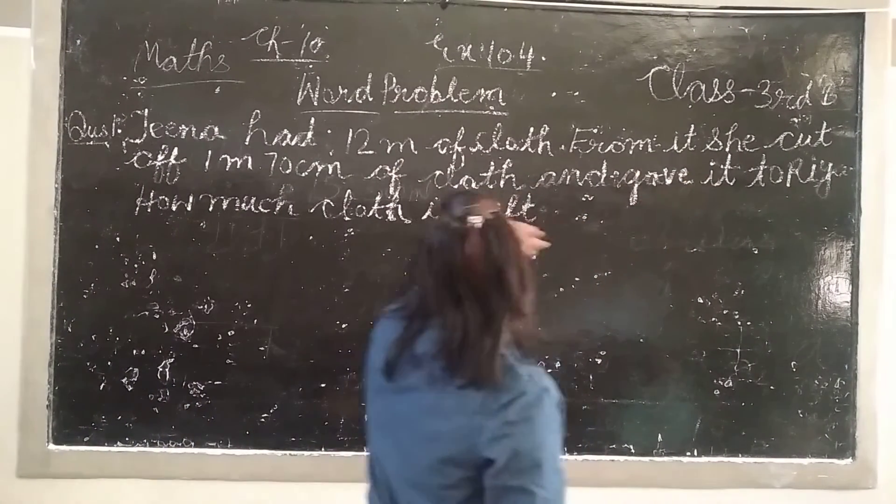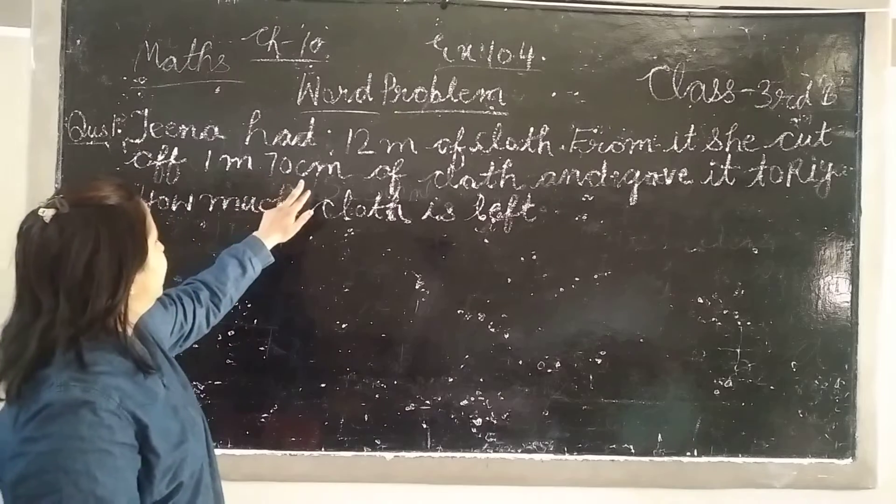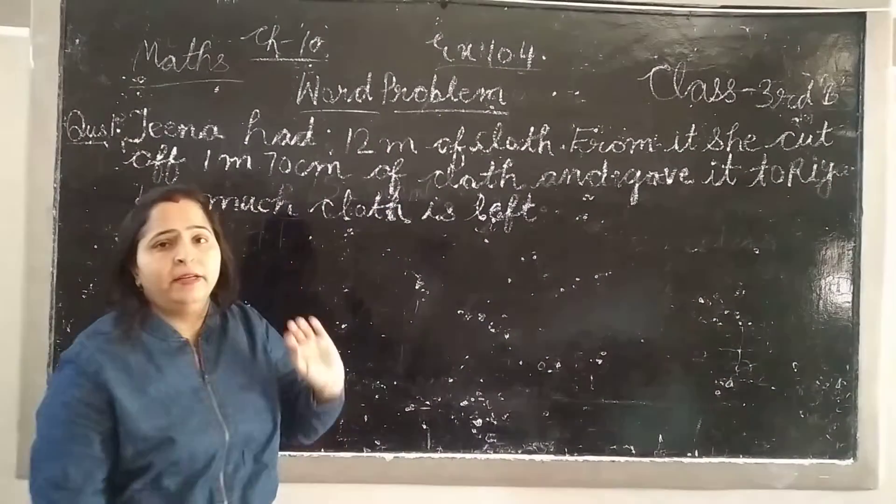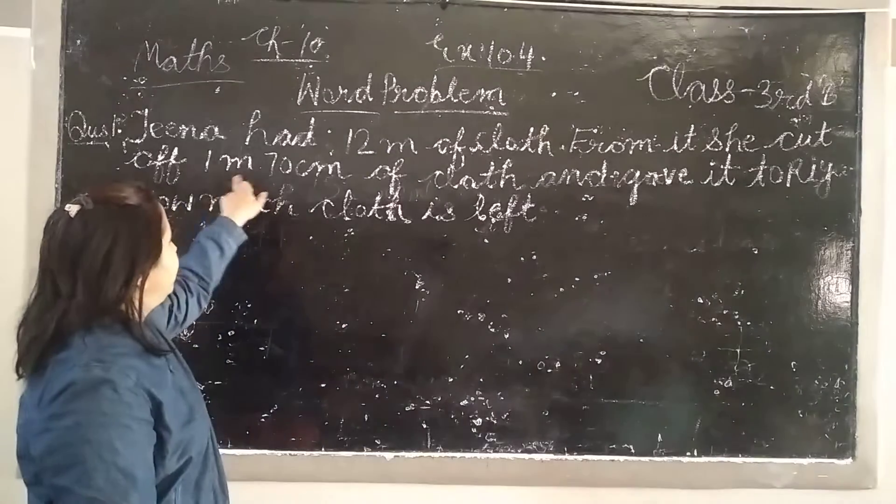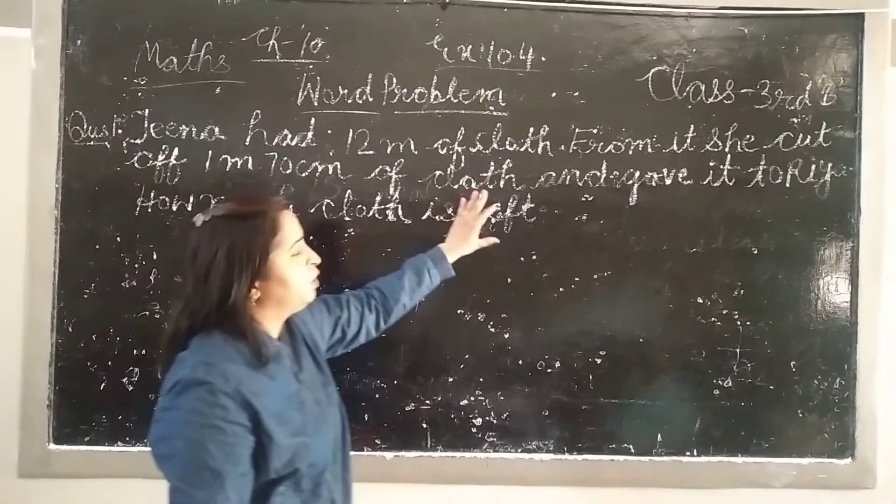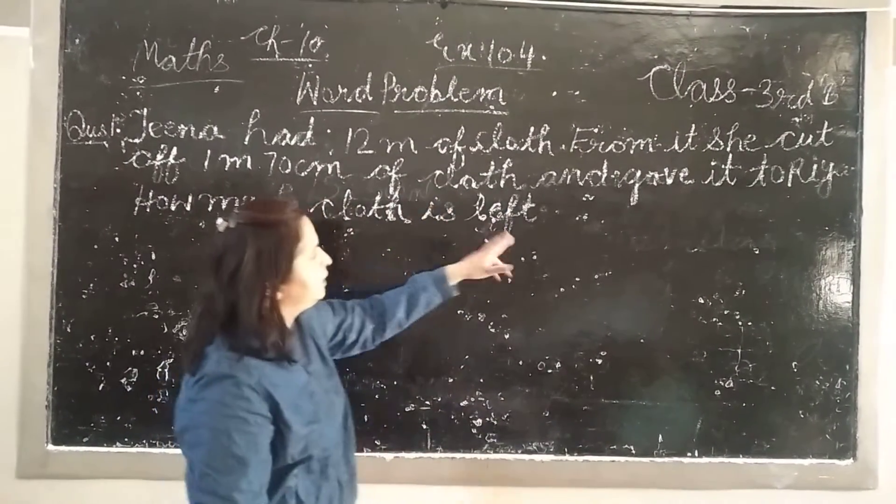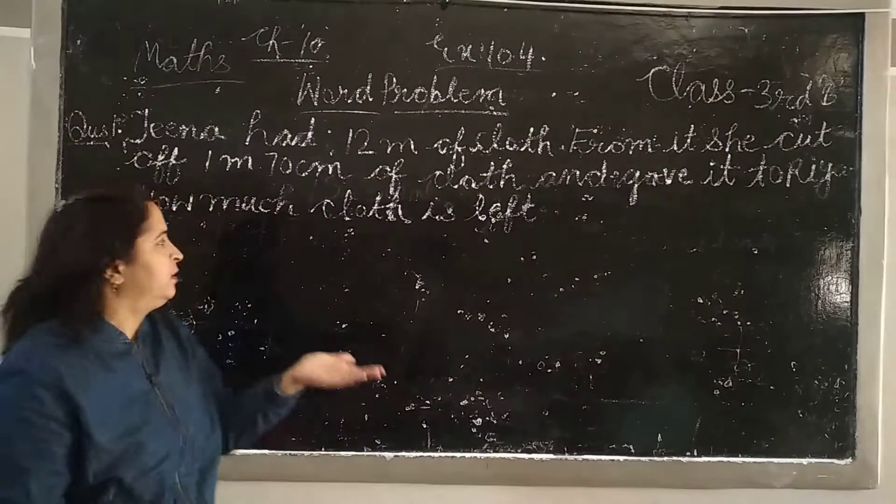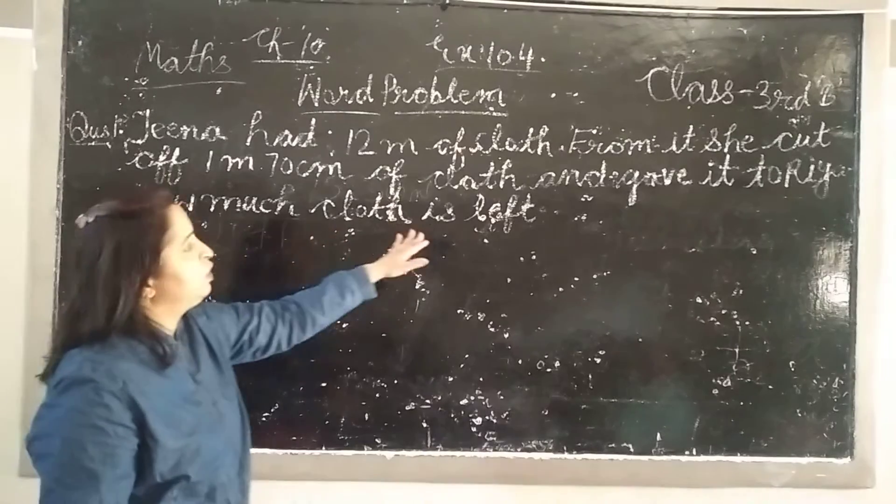From the sheet she cuts 1 meter and 70 cm. She has 5 meters total cloth and cuts 1 meter 70 cm. How much cloth is left?